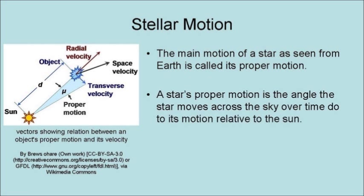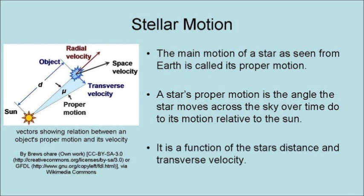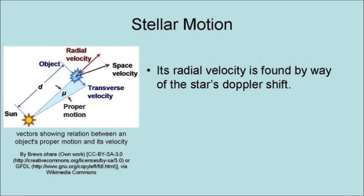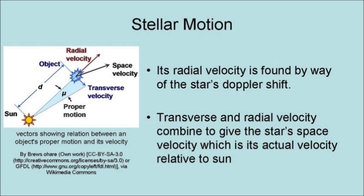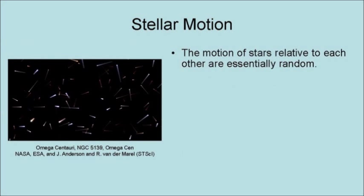The main motion of a star as seen from the Earth is called its proper motion. A star's proper motion is the angle the star moves across the sky over time due to its motion relative to the Sun. It is a function of the star's distance and transverse velocity. Radial velocity is found by way of the star's Doppler shift. The transverse and radial velocity combine to give the star space velocity, which is its actual velocity relative to the Sun.